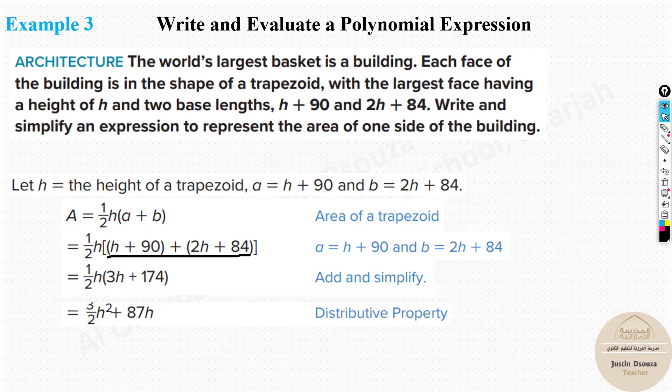H will remain outside. And now, you need to multiply this H inside. You just don't multiply H. You multiply the entire thing because half H is there. Half H times 3H will be 3 by 2. 3 divided by 2. H times H is H squared. And same thing. Half multiplied by 174 is 87. 87H. This is the answer.